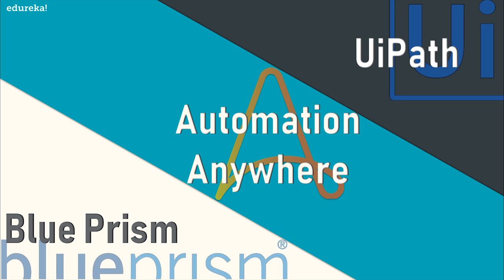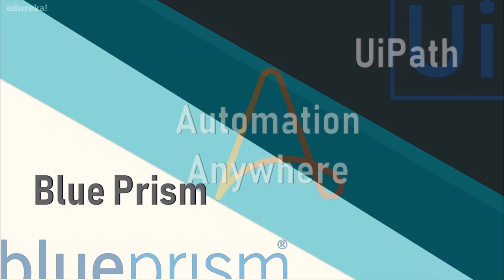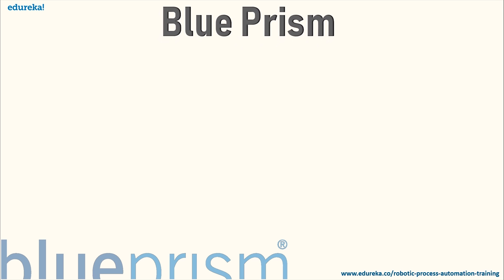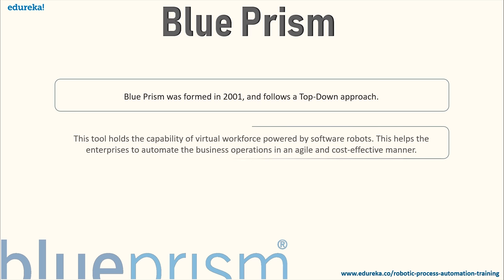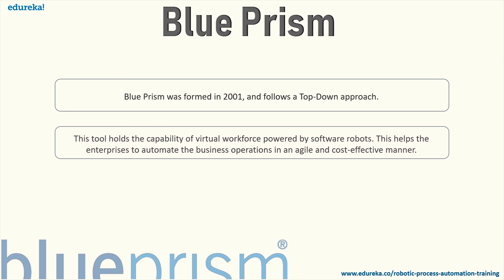Before we begin the face-off, let me brief you about each of these tools one after the other. Blue Prism was formed in 2001 and follows a top-down approach. This tool holds the capability of a virtual workforce powered by software robots and helps enterprises automate business operations in an agile and cost-effective manner.